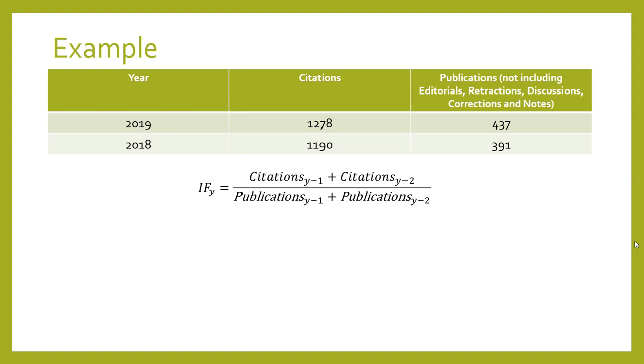We start with the formula that we've discussed and we're going to look at 2020, so y equals 2020. The impact factor in 2020 is your citations in 2019 (that's 2020 minus one) plus your citations in 2018 (that's 2020 minus two). That's how the formula works.